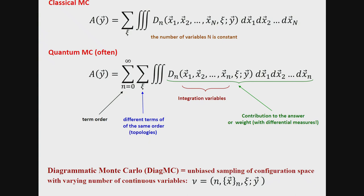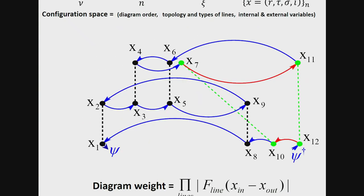This will simply sample different terms or enumerate different terms which have exactly the same order — you can call them topologies if we are talking about diagrams. Then I have a bunch of integration variables, and I have to take integrals over them. This is maybe some external parameter, it can also be a continuous or discrete variable. So the entire expression here I will call the configuration weight, because if I specify all parameters — n, psi, and all the variables — that's how much this particular point in the configuration space contributes to the answer, including all the differential measures. That's what I will call the diagram weight.